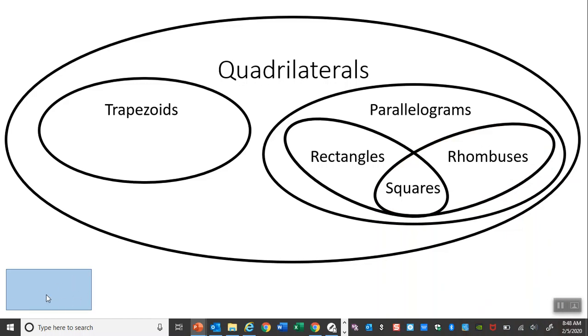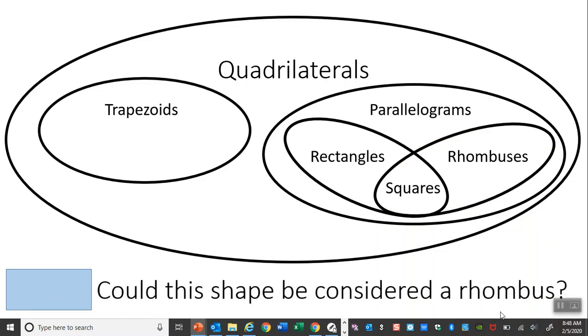Okay. This shape is a rectangle. Could it be considered a rhombus? Well, if I slide it over here, the rectangles do not, a pure rectangle doesn't overlap with a rhombus. A rectangle that has all sides the same could turn into a rhombus. But a rectangle does not have all the sides the same. So it doesn't fall into the rhombus zone. So no, it does not.